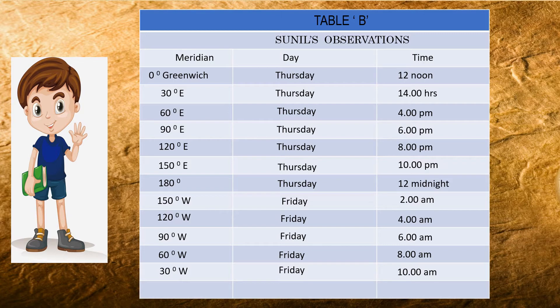When Sunil reached 0 degree Greenwich, the day was Friday and the timing was 12 o'clock in the afternoon. So there is much confusion: both Meenal and Sunil were passing the 180 degree meridian, but one is going to the next day and the other was going to the previous day.